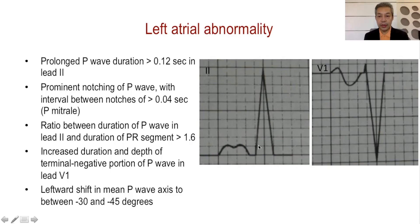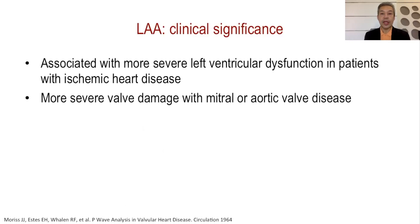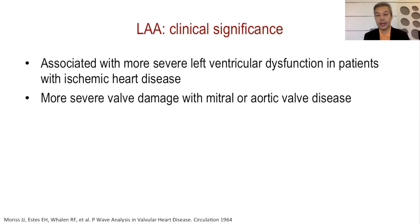Once you see these findings in lead 2 and lead V1, you read it as left atrial abnormality rather than left atrial enlargement. The clinical significance is that it is usually associated with more severe left ventricular disease in patients with heart failure, hypertension, or ischemic heart disease, and in patients with severe left-sided valve diseases like the mitral or aortic valve. It portends more severe disease and, of course, worse prognosis.